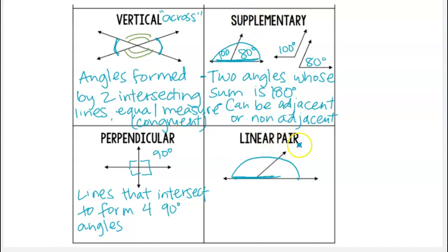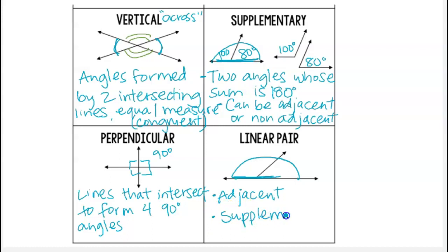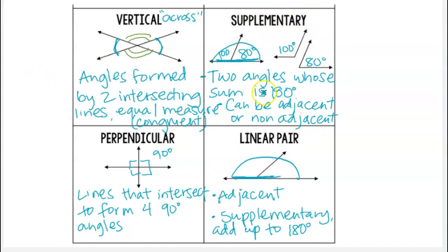This is a special type of supplementary angles — these are our linear pair. For a linear pair we do want the angles to be adjacent, so we want them to be next to each other and form a straight line together. These are supplementary angles, so they also add up to 180 degrees. A linear pair is a more specific type of supplementary angles because they are adjacent, while supplementary can be adjacent or non-adjacent.